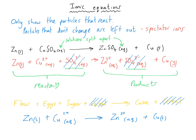Not only does removing spectator ions make the equation simpler, but it makes it easier to see that the zinc is being oxidized and the copper is being reduced. Ionic equations look a little more complicated because some chemicals show their charges, but they are simpler in the way they help us get to the heart of what's really happening in the chemical reaction.